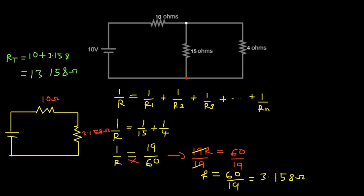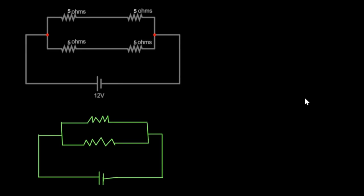Let's try another question. With this example, you can see directly that we have resistors in both series and parallel connections. These two 5 ohms resistors here are in a series connection, and these other two 5 ohms resistors are also in a series connection, because the same current flows through each pair before reaching the node.